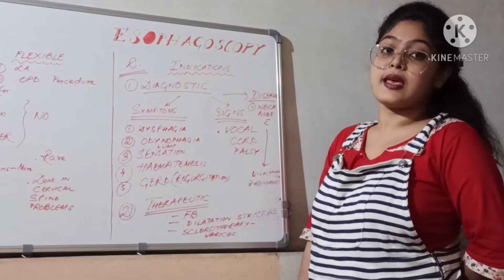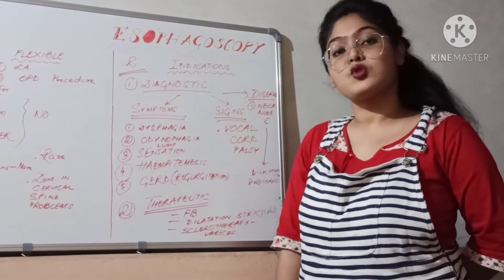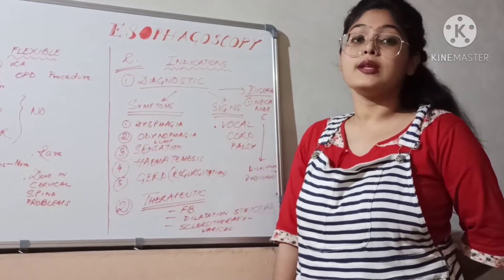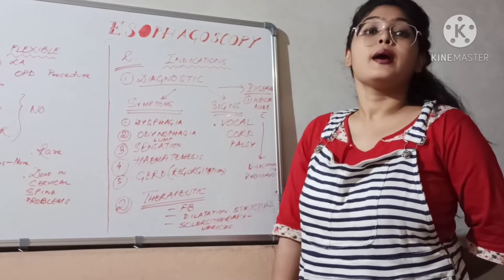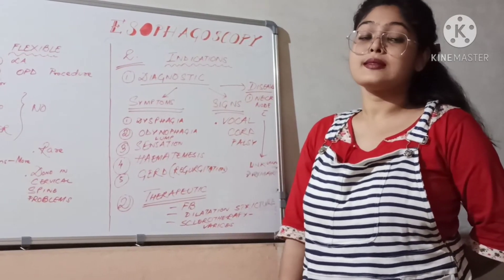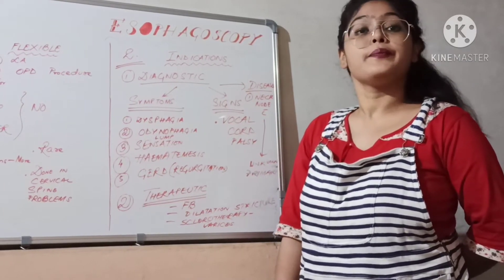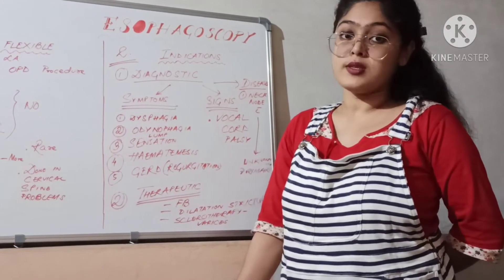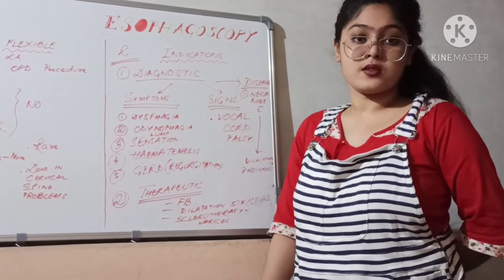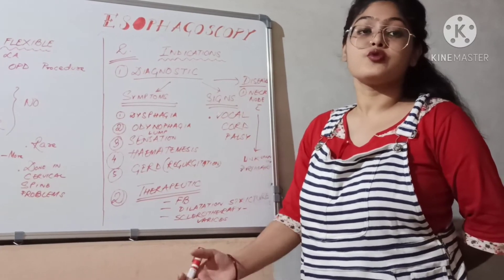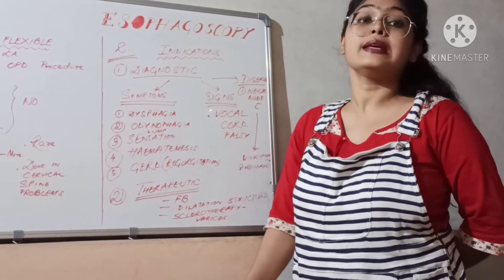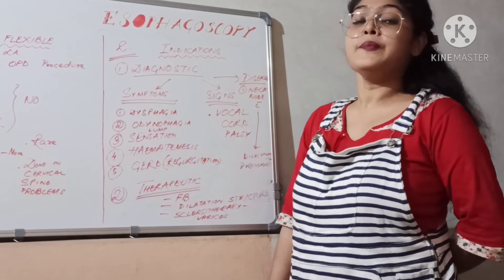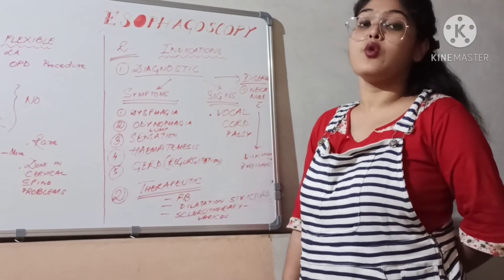Under diseases, number one is a neck node with an unknown primary — if a patient presents with a neck node and you cannot identify the primary. Number two, panendoscopy is done in cases of neck nodes in the head and neck region. Even if a cause is found, such as in the larynx or nasopharynx, you should always do esophagoscopy to look for any second primary.